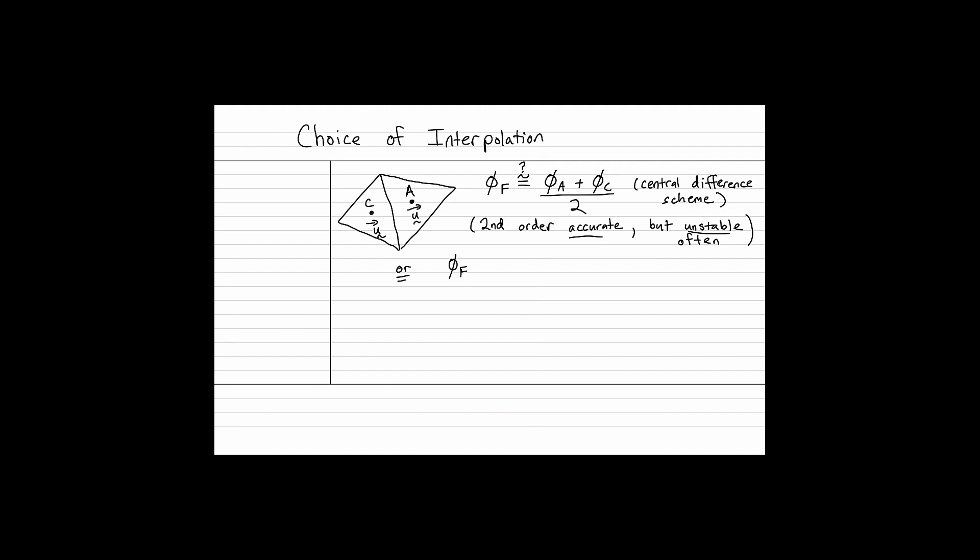It turns out that a more stable way to do this, although definitely less accurate, is to actually just use the value of the centroid. For example, if the flow is going in this direction, we just use this value and say that the value over here is probably pretty close to this value. That actually only works if the velocity is pointed in that direction. If the velocity is pointed in the other direction, we'll use the adjacent value.